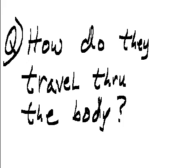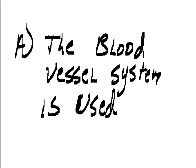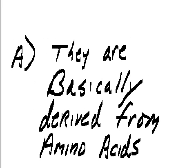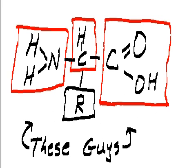How do they travel through the body? Answer: the blood vessel system is used. Question: what are hormones made up of? Answer: they're basically derived from amino acids.